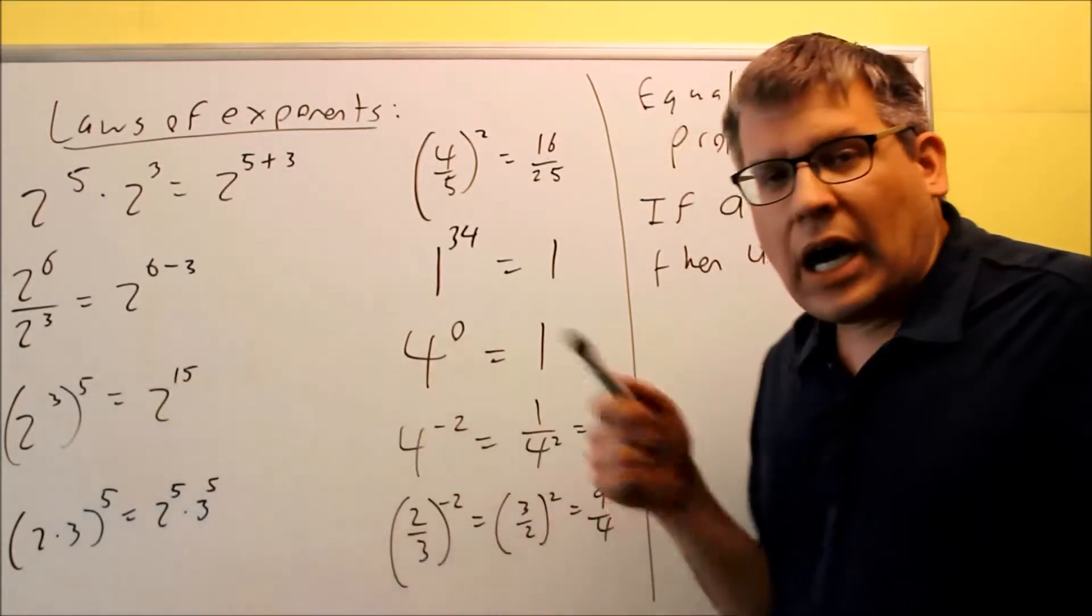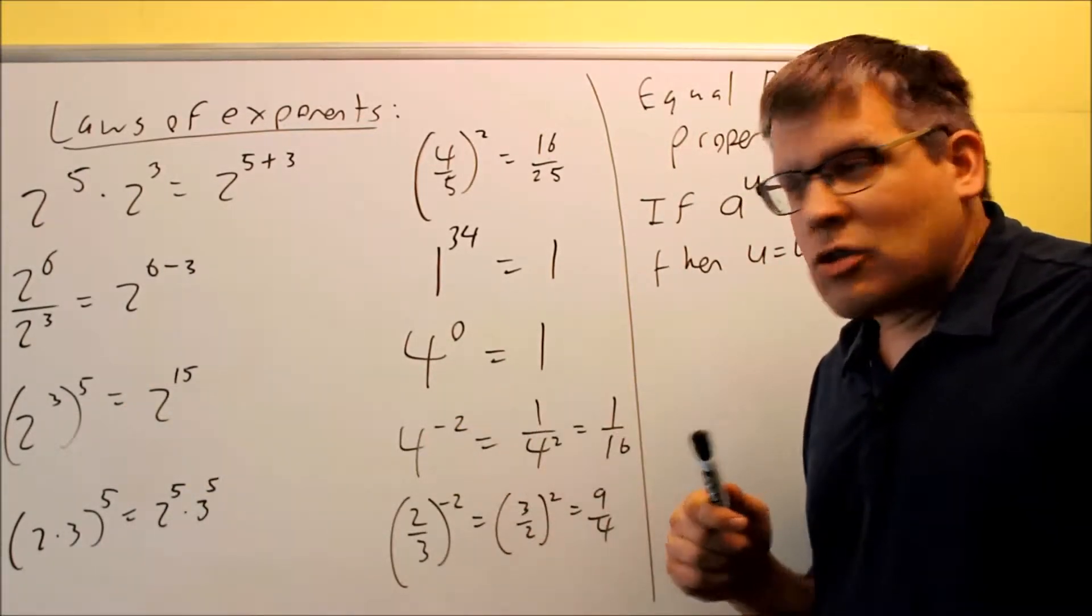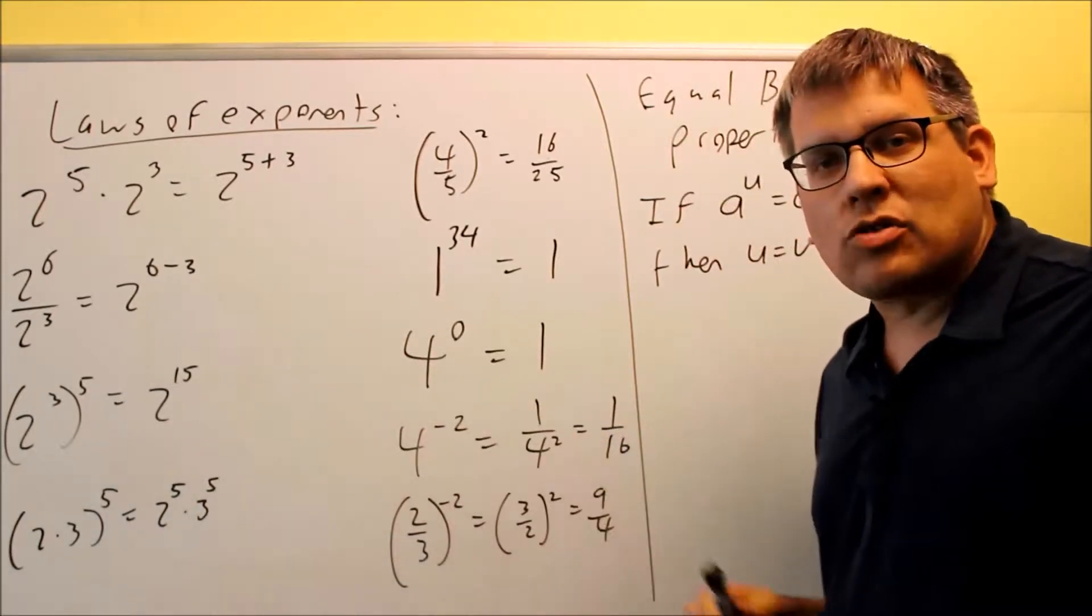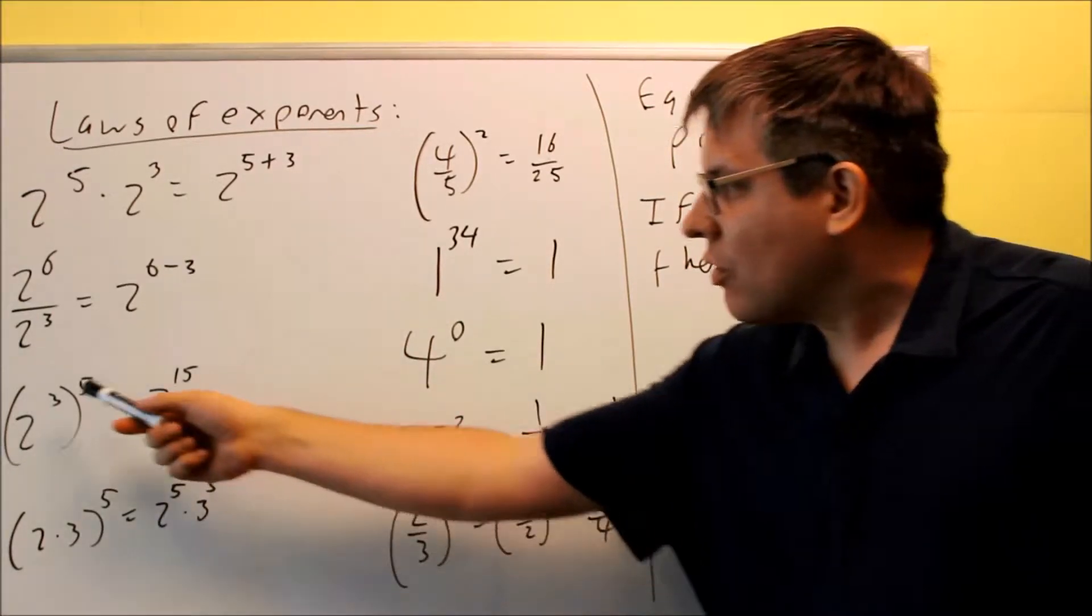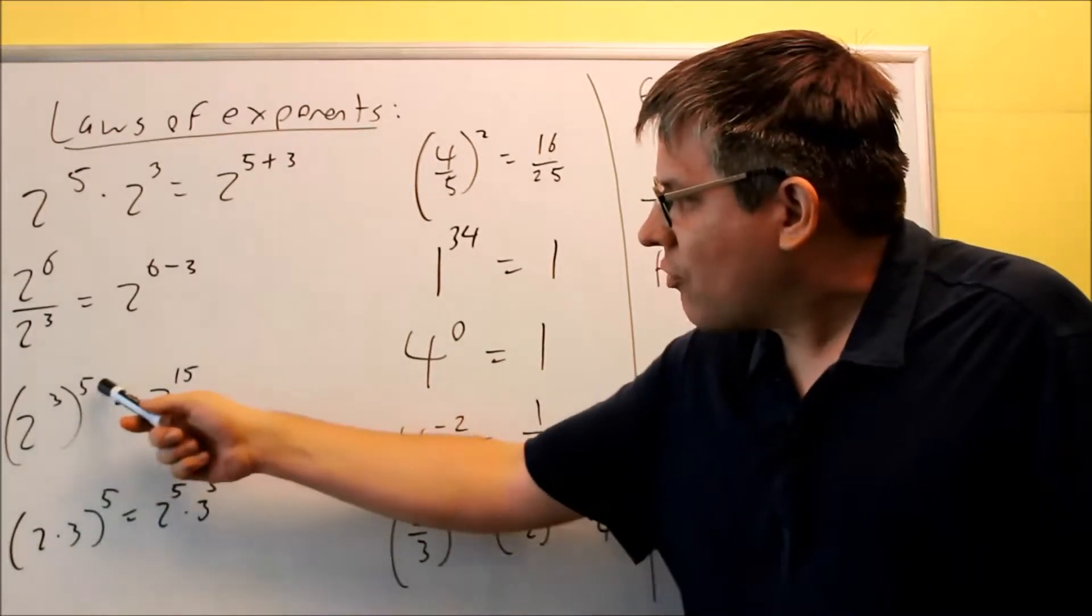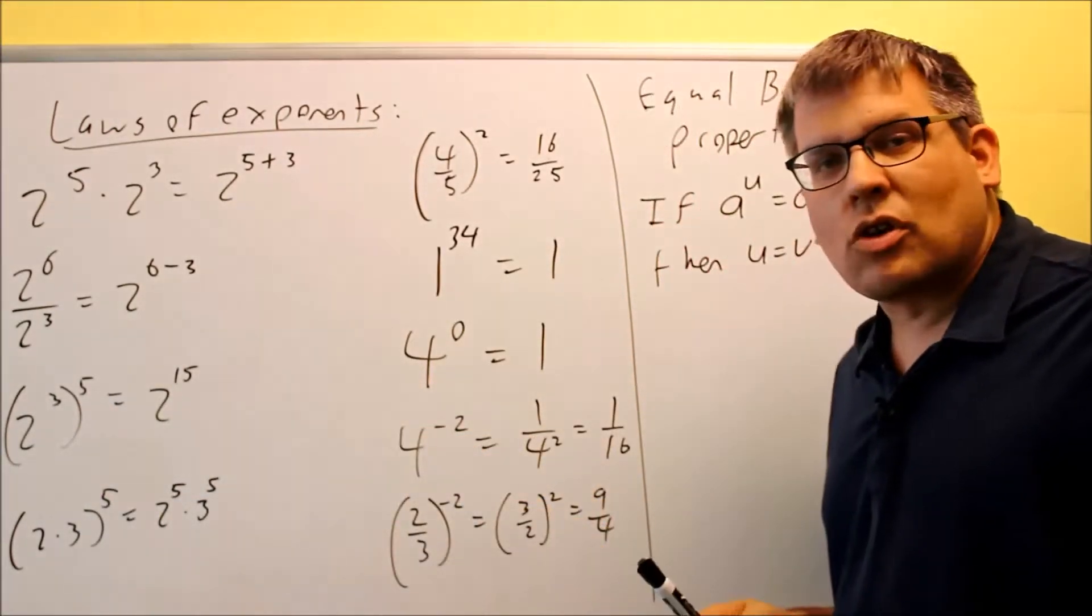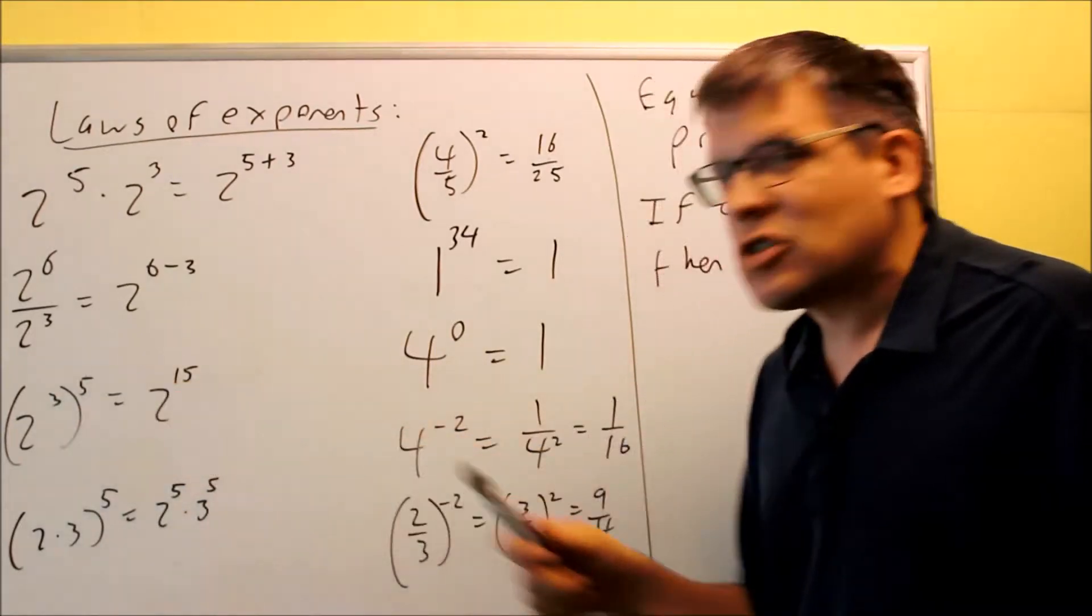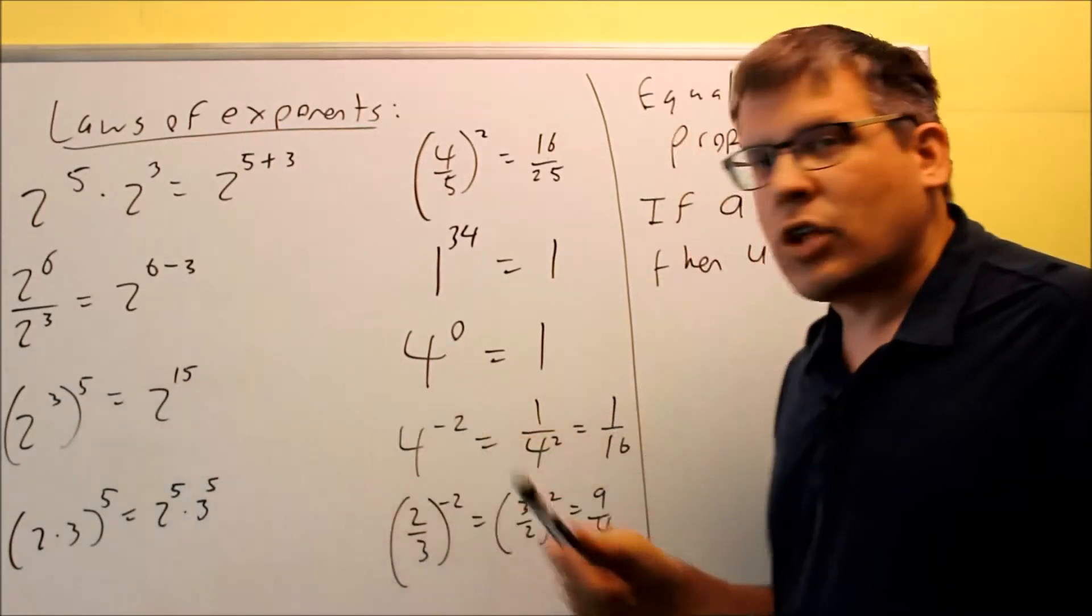This one is when you have a power inside of another one. So basically you have a power that's being raised to another power. If you have 2 to the 3rd to the 5th power, you're going to get 15 as a result. So again, you're multiplying the exponents together. 3 times 5 will give you 15.